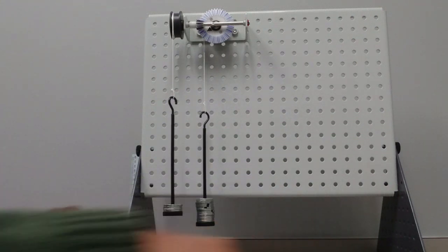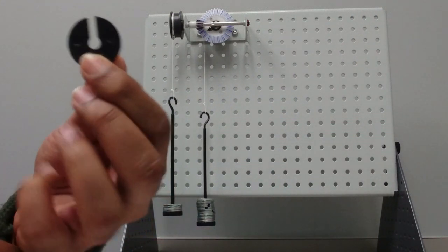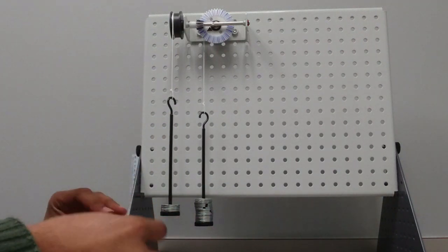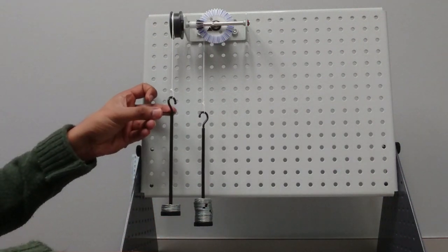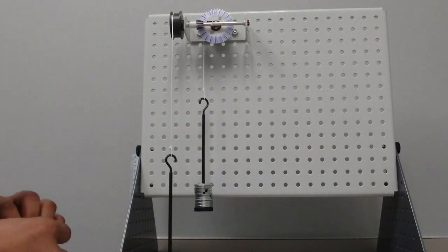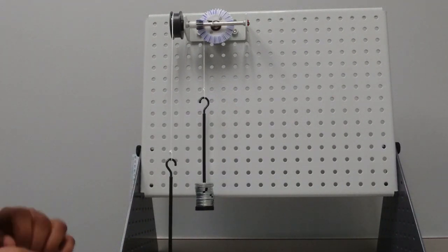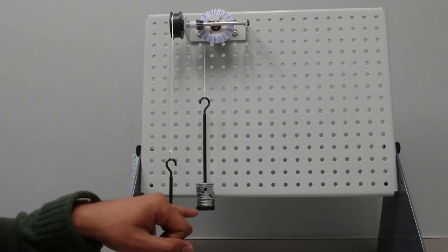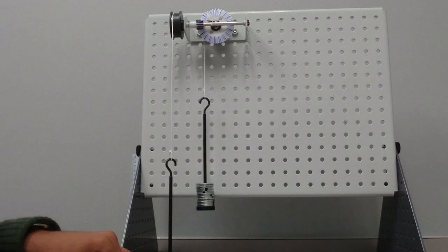So what I'm going to do now is that I'm going to add this black disc I have, which are each one gram. So I'm going to add, for example, one at a time, and you see it has started to move. So for this setup, to raise 150 grams, I needed 51 grams.